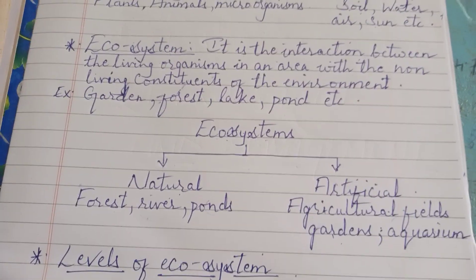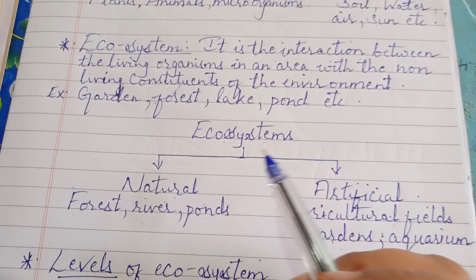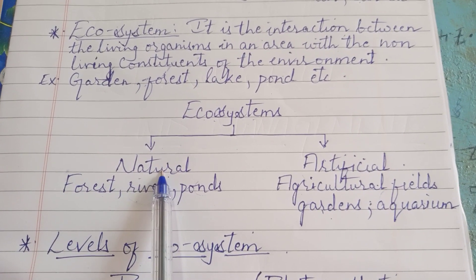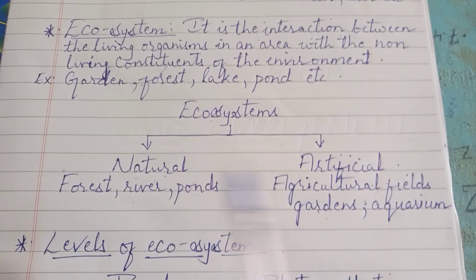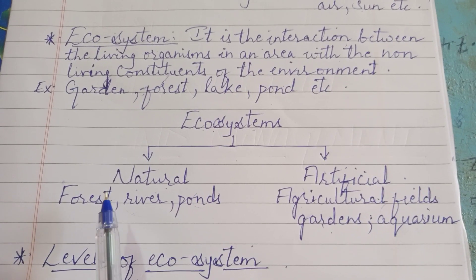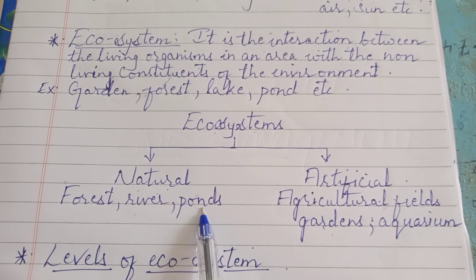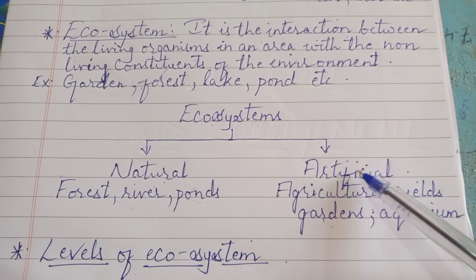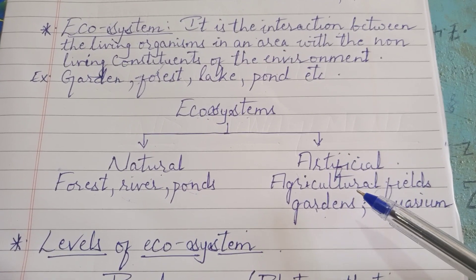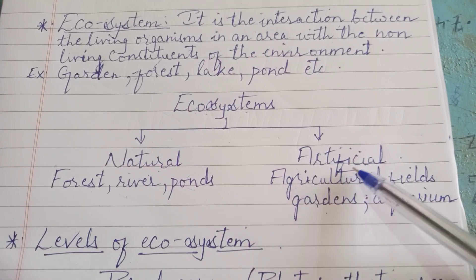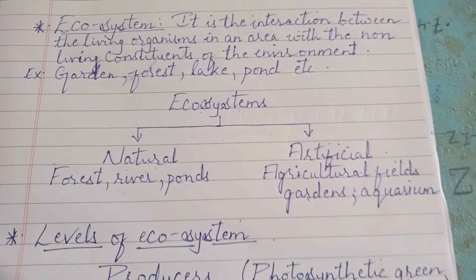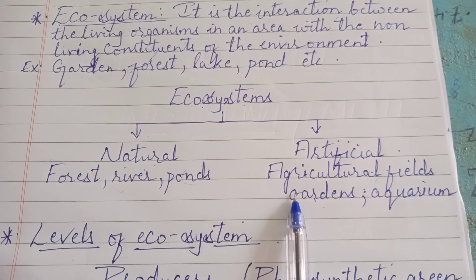On our earth, we have different kinds of ecosystems, divided into two main categories: natural ecosystems and artificial ecosystems. Natural ecosystems are formed by natural phenomena, like forests, rivers, and ponds. Whereas artificial ones are made by humans — though they appear very much like natural ones, they are prepared in a controlled manner. Examples include agricultural fields, gardens, and aquariums.